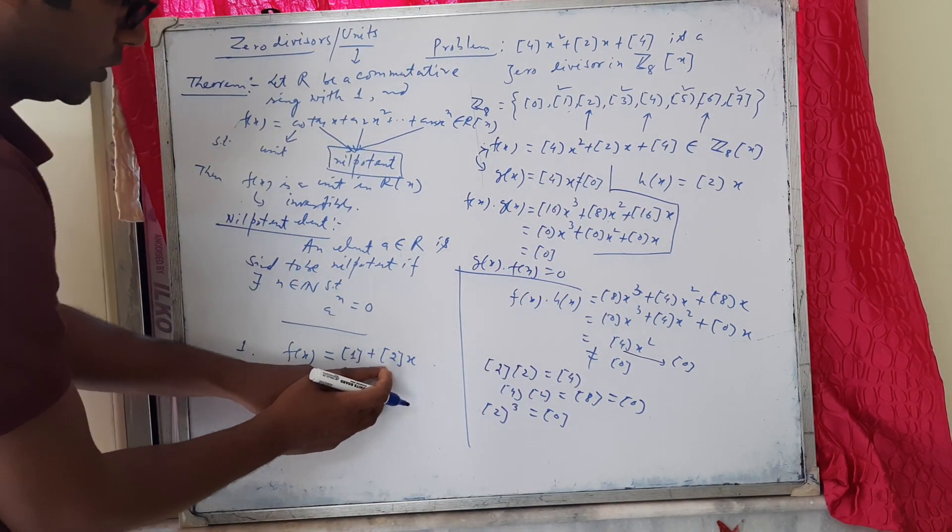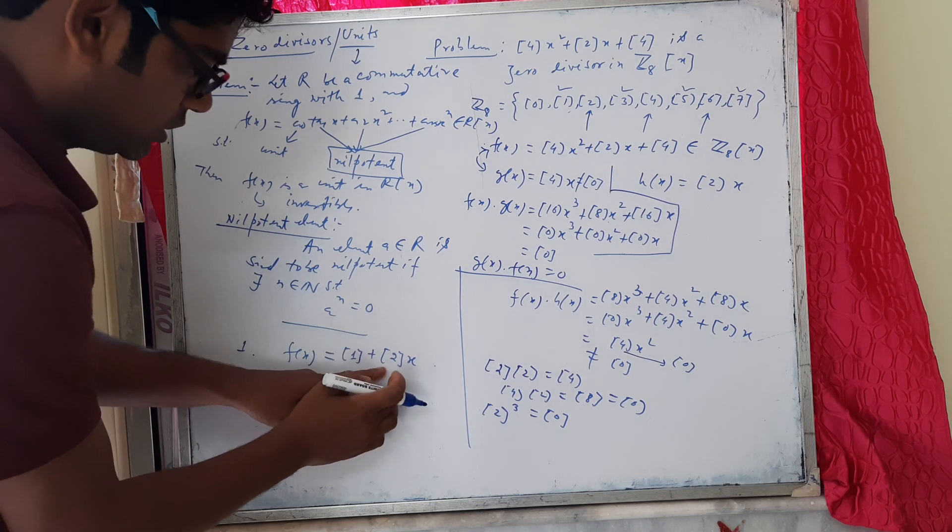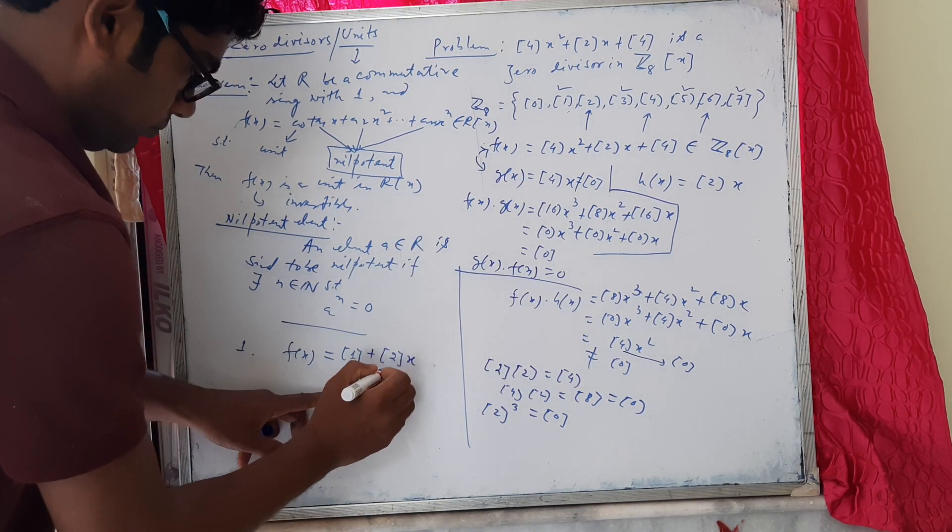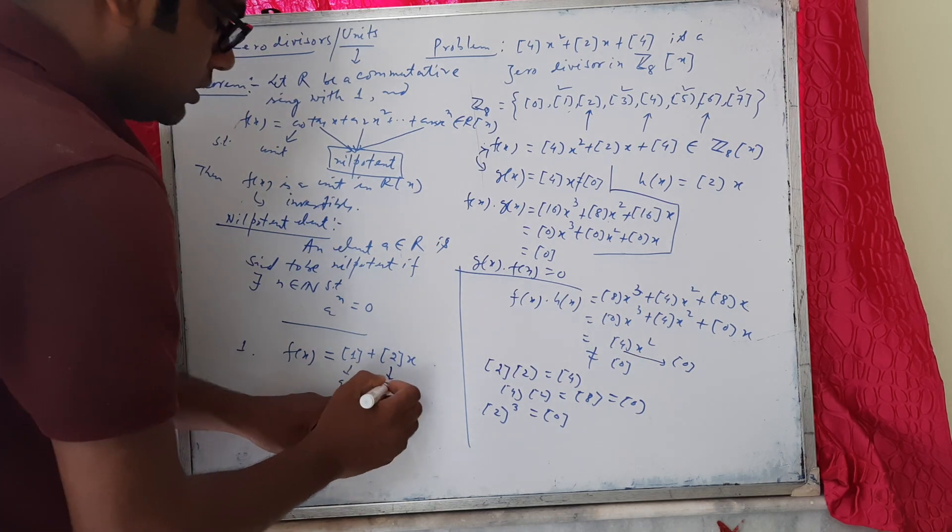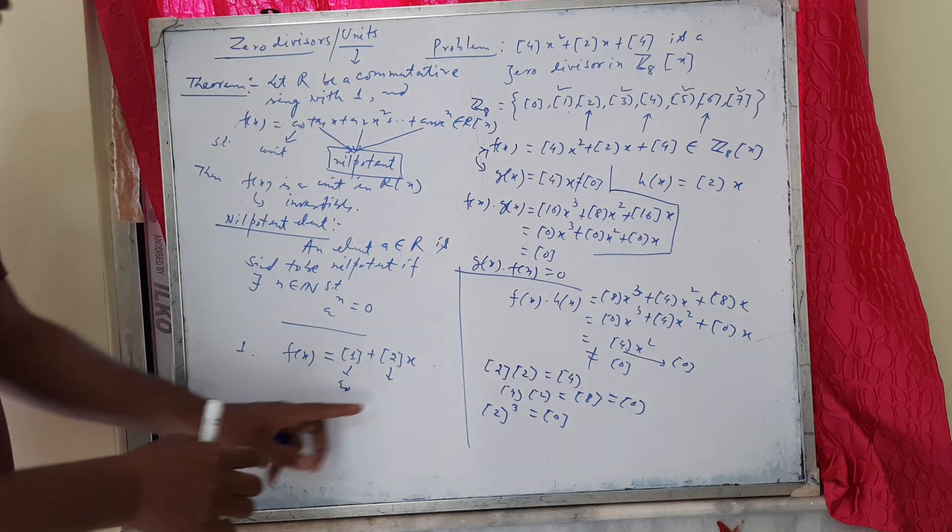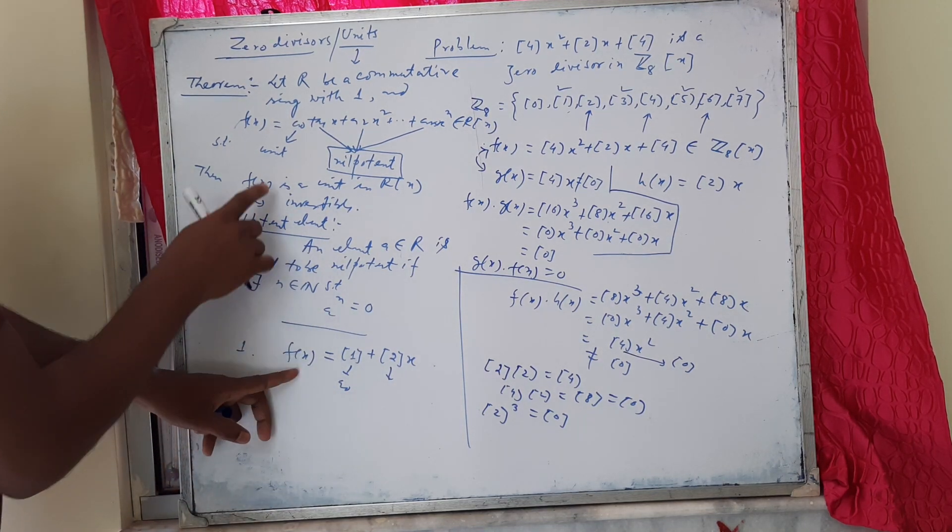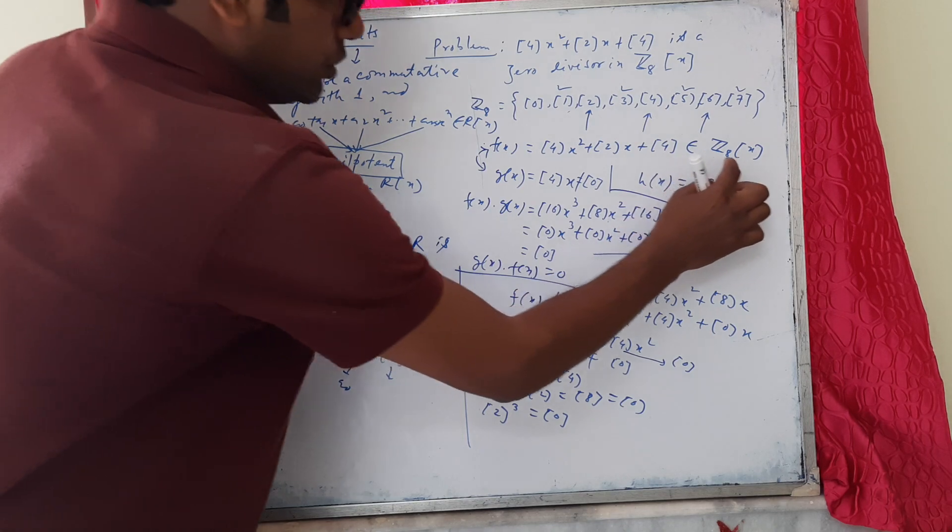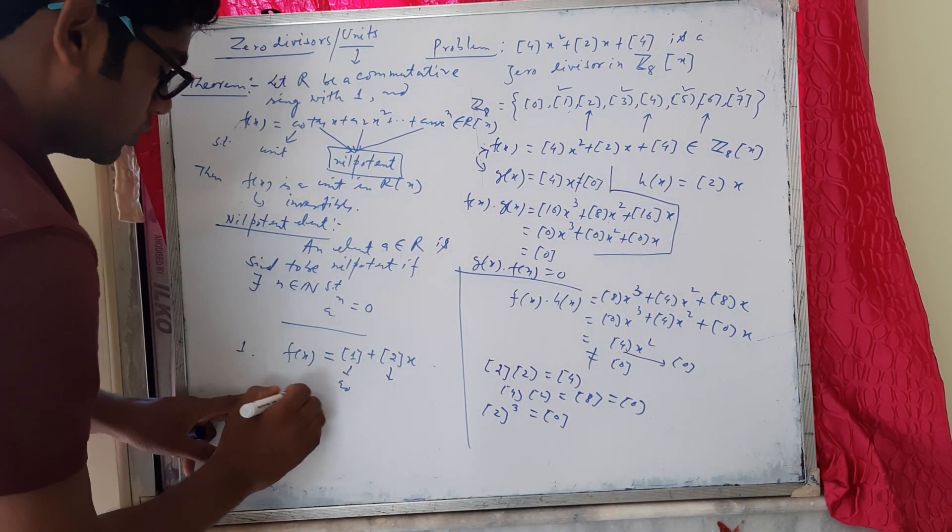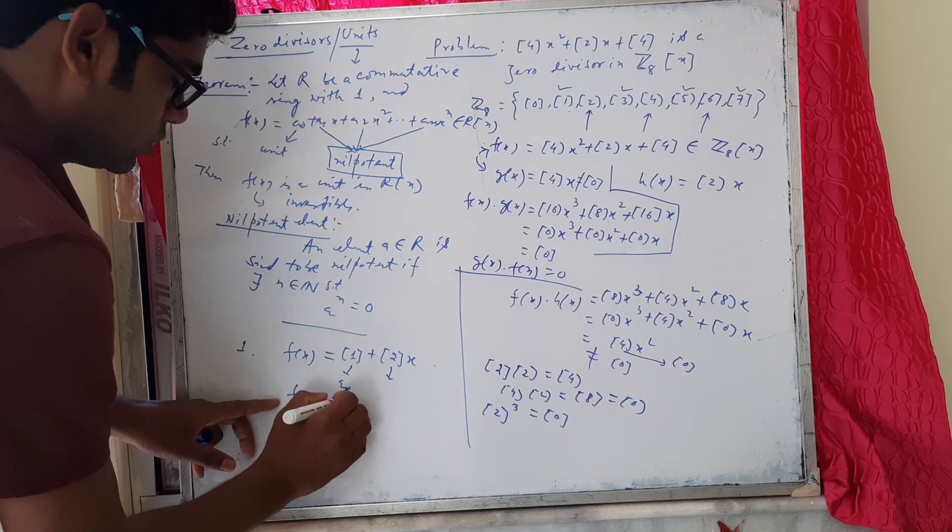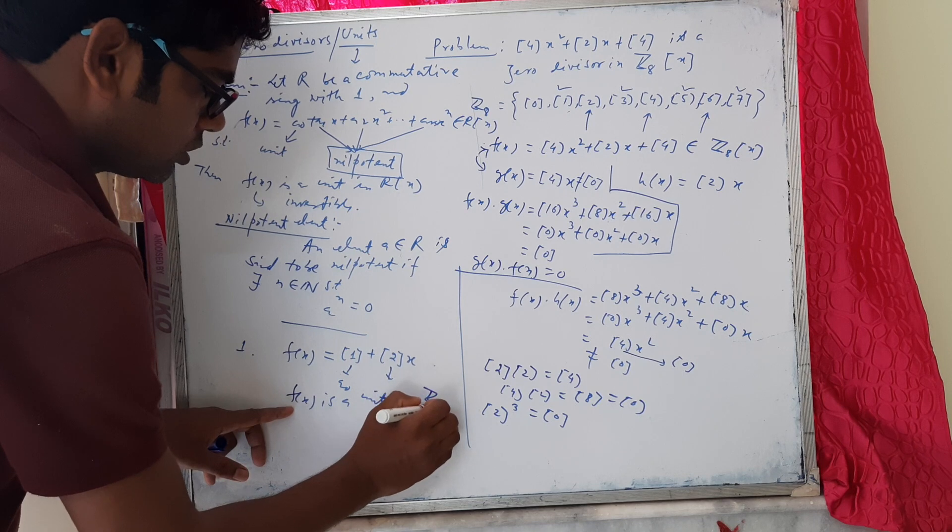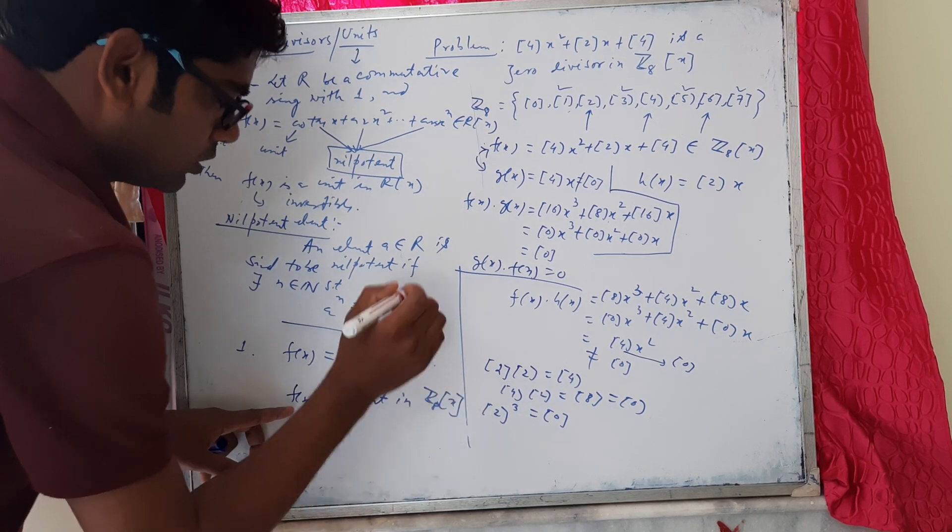It works here. Using this theorem, we see that class 1 is a unit in Z₈, and class 2 is a nilpotent element in Z₈. So by this theorem, this polynomial is a unit in Z₈[x]. That is, this polynomial is invertible. Therefore, f(x) is a unit in Z₈[x].